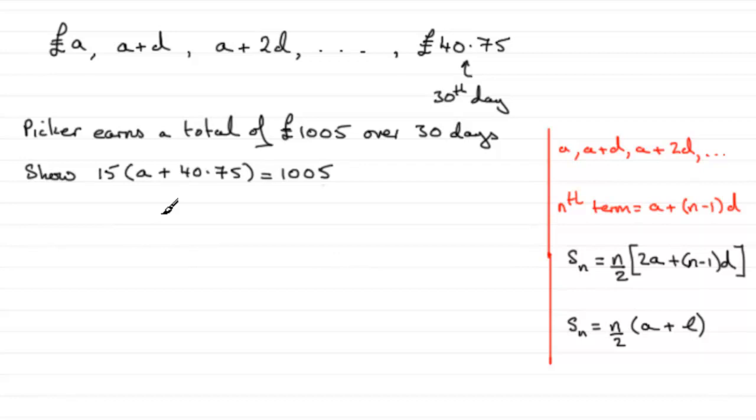So first of all then, using this, I know that we have 1005 equals n over 2, so that's going to be 30 over 2 multiplied by the first term, A,